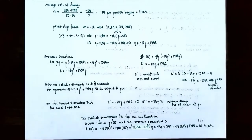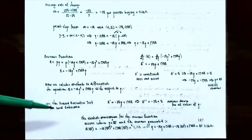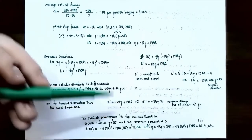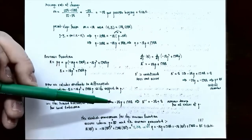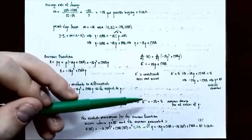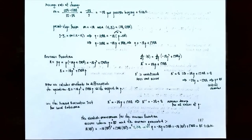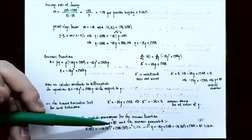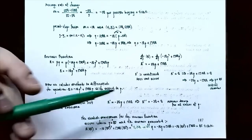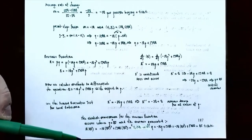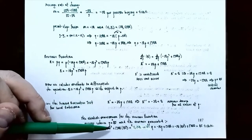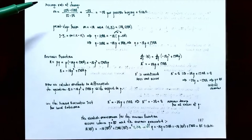Since we only have one critical number, we can use the second derivative test for local extrema. Taking the second derivative of R: R″ = −20. The revenue function always has a second derivative of negative 20, meaning it is always concave down for all values of p. So the revenue function has an absolute maximum at p = 85. Plugging in: R(85) = −10(85²) + 1700(85) = $72,250. So when tickets are $85 each, the revenue is $72,250.